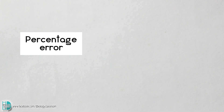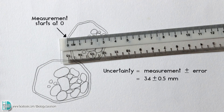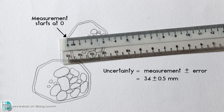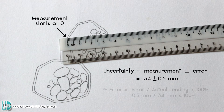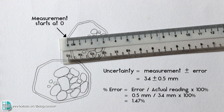Percentage error is calculated as the error expressed as a percentage of the actual reading. For example, the uncertainty of the measurement of this drawing is 34 ± 0.5 mm, so the percentage error is 0.5 divided by 34 times 100%, which equals 1.47%.